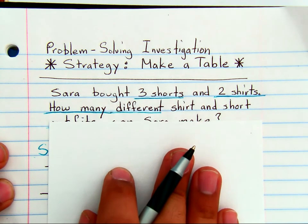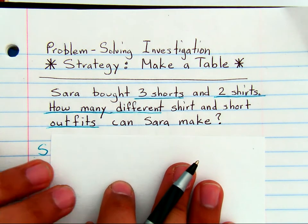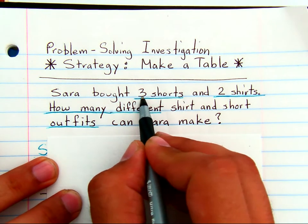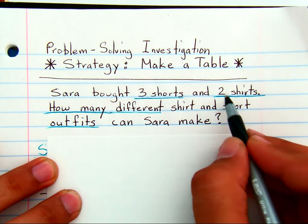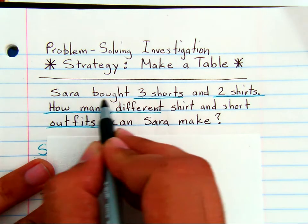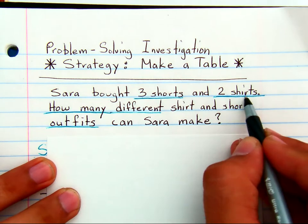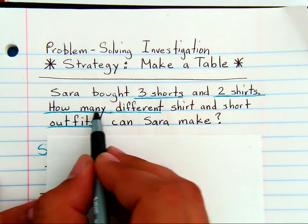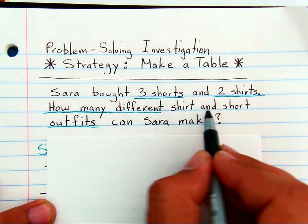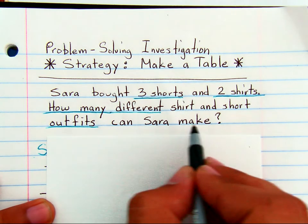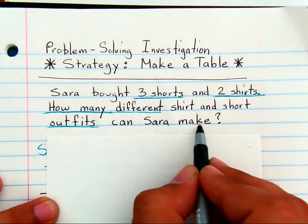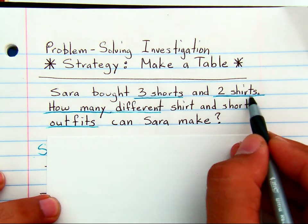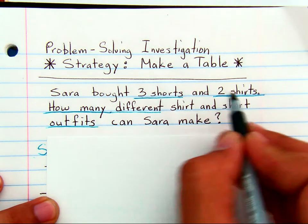If you have a word problem that is talking about having three pairs of shorts and two shirts, so Sara bought three shorts and two shirts, the question then is how many different shirt and short outfits can Sara make? If you're talking about outfits, you have to combine shorts and shirts in different ways. How many different ways can you combine them?